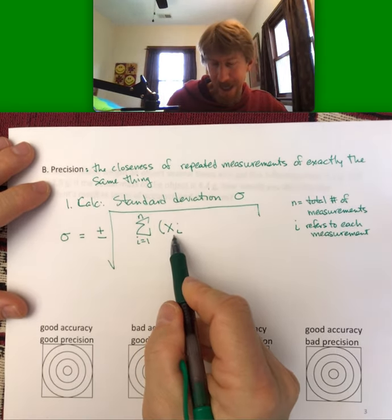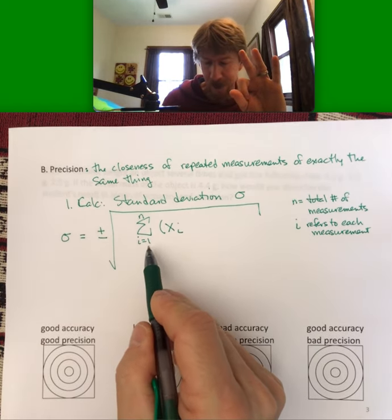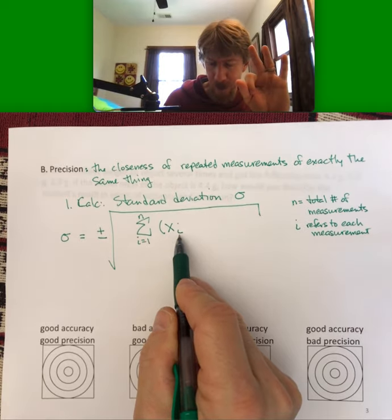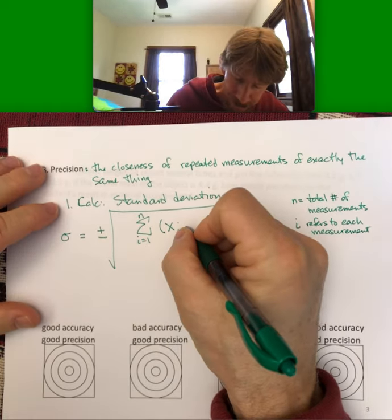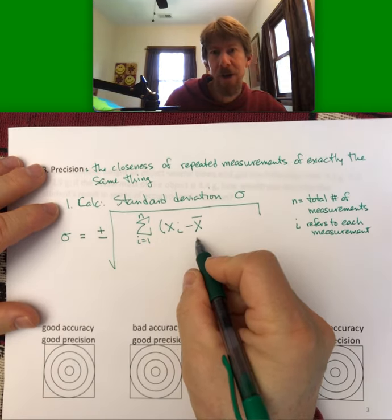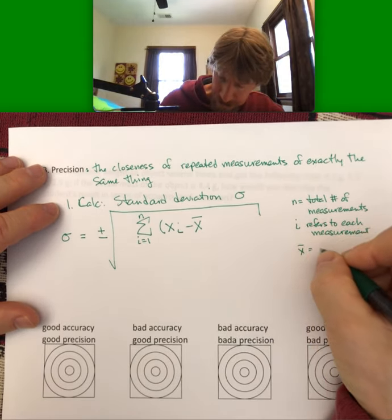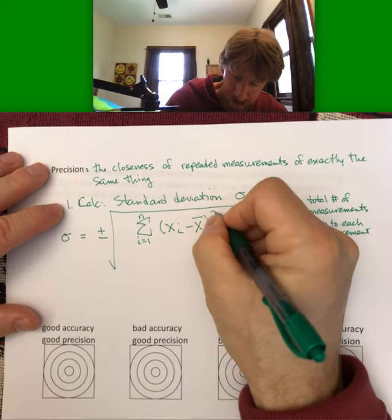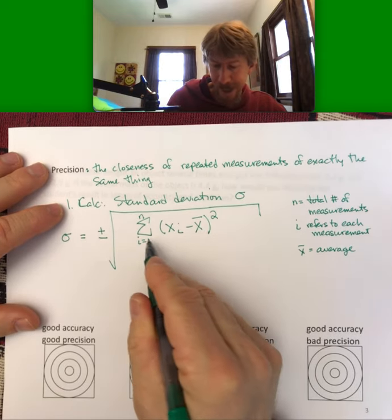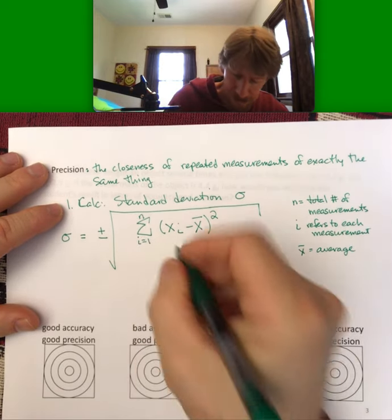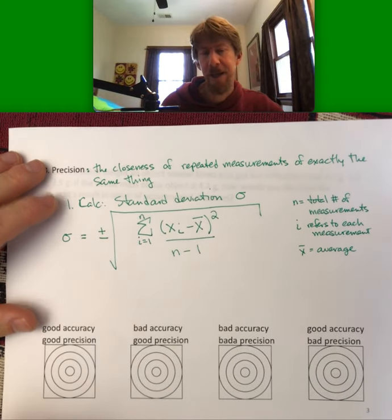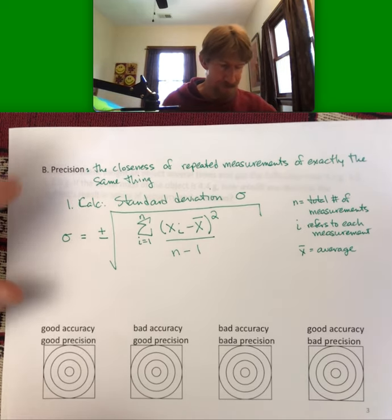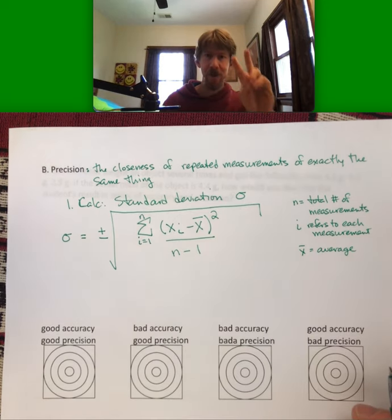In the formula, x_i is each individual measurement — if we have three measurements, i goes from one to three. x-bar is the average. You compute each (x_i − x-bar) squared, add them all up, divide by n minus one, and take the square root. Don't worry — we'll practice this in a couple of minutes.